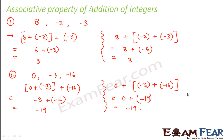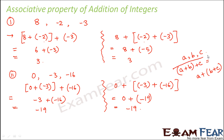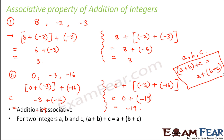Therefore we can conclude that for three integers a, b, and c: (a plus b) plus c equals a plus (b plus c). Whether we first find the sum of a and b and add it to c, or first find the sum of b and c and add it to a, the result is the same. So the order doesn't really matter. Addition is associative for any three integers a, b, and c.